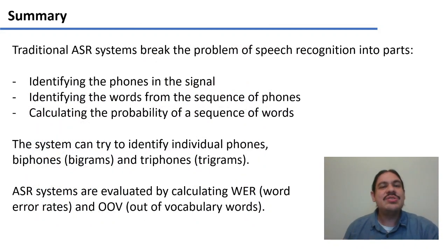In summary, traditional speech recognition systems break the problem into separate parts. They try to identify phones. From the phones, they try to identify words, and then they try to figure out the probability of those words to produce an output. We can try to train the system to recognize words, phones, or combinations of phones for more accuracy. And some of the metrics that we can use are word error rate and out of vocabulary words.